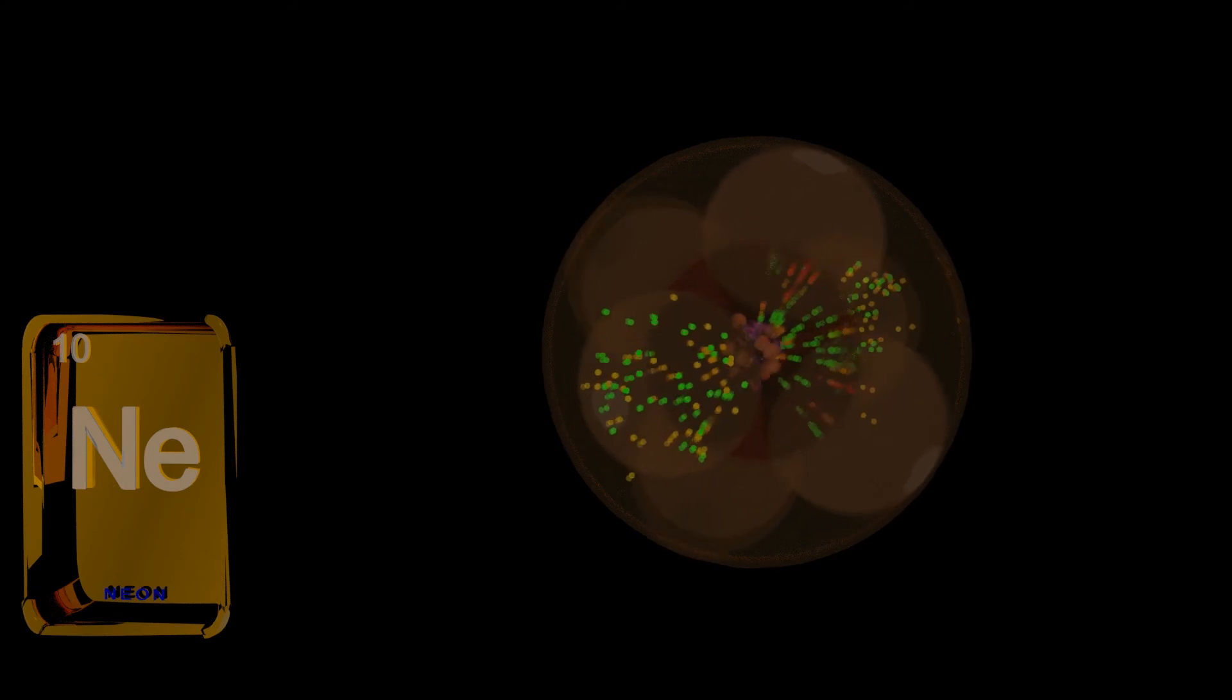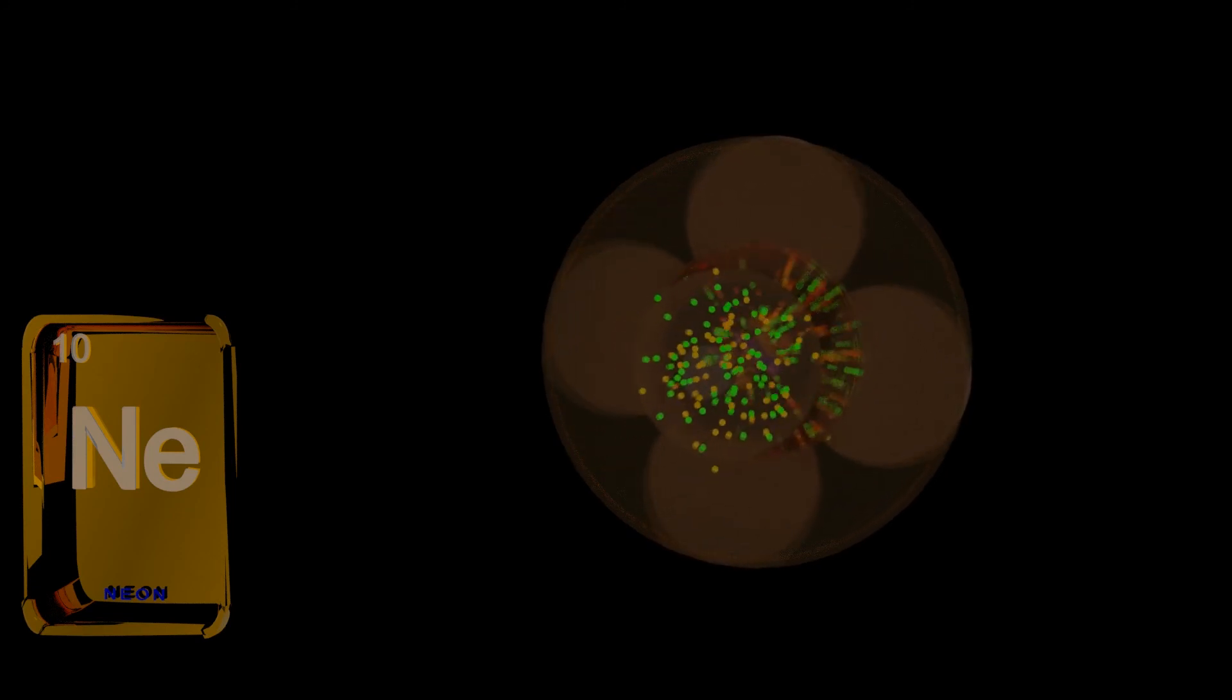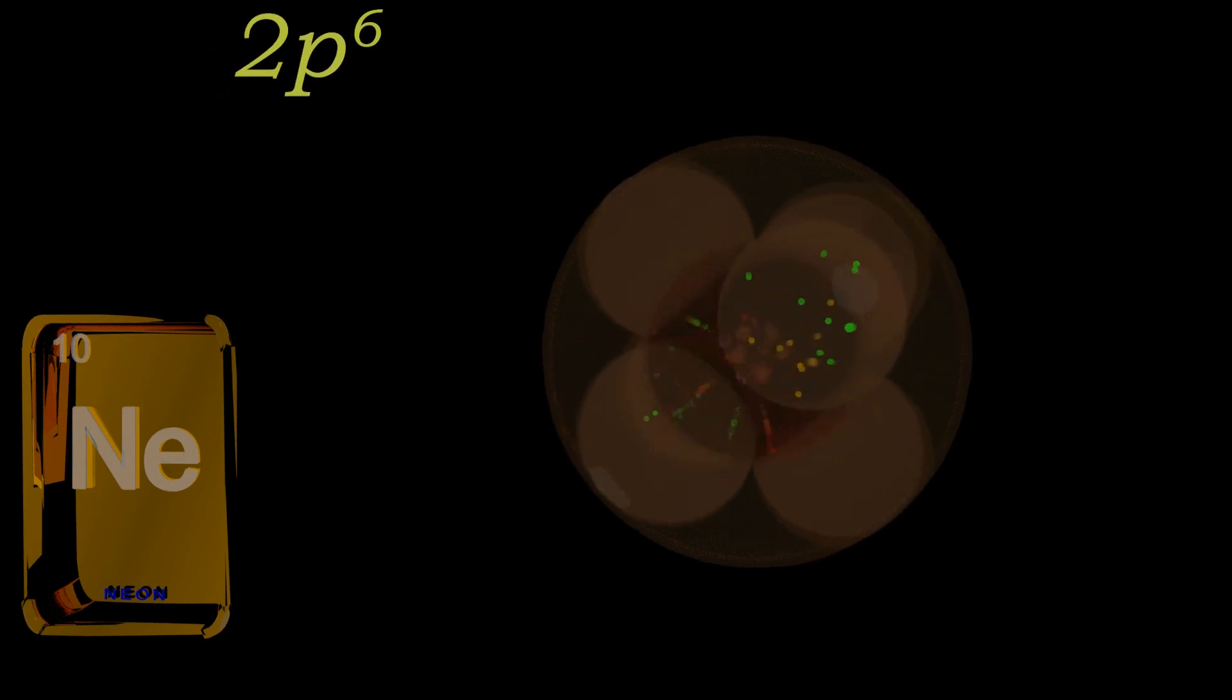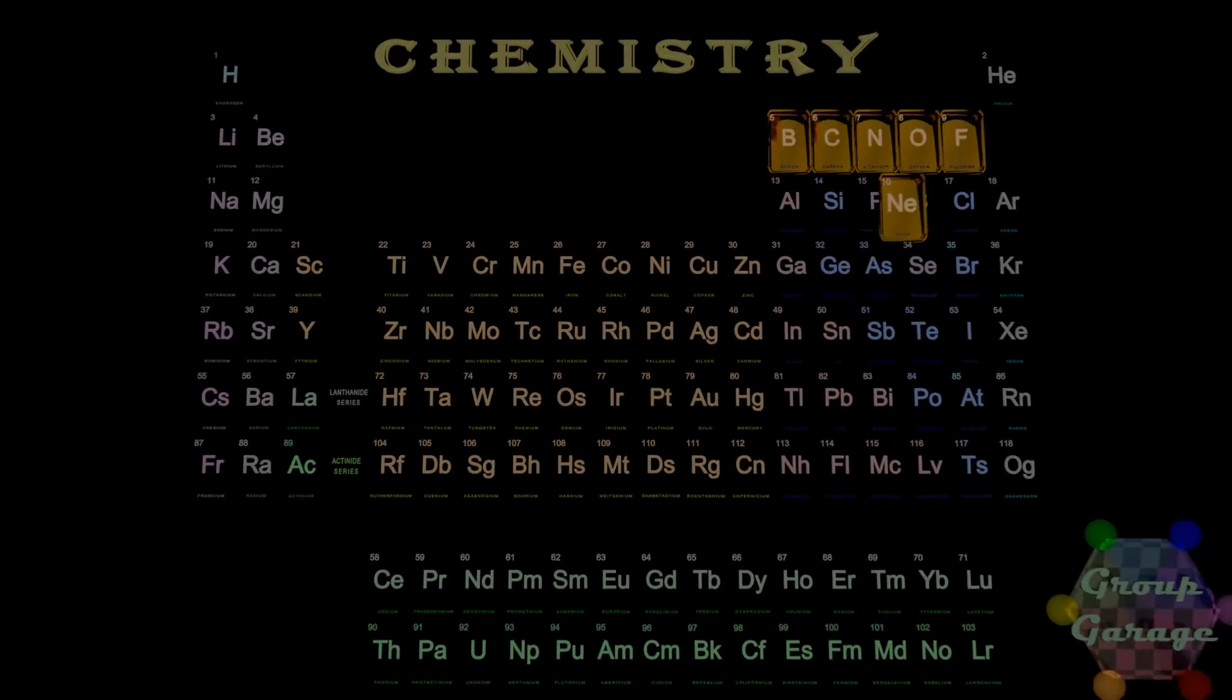Finally, neon. We know because neon is a noble gas that the outer shell is going to be full. And we see that with ten positively charged protons, ten neutral neutrons to hold the atom together, and ten negatively charged electrons for an electrically neutral atom, the sixth electron is the final in the 2px, y, or z orbitals. And this completes all three of the p orbitals with two electrons each. The Pauli exclusion principle tells us we're done. The shell is full.